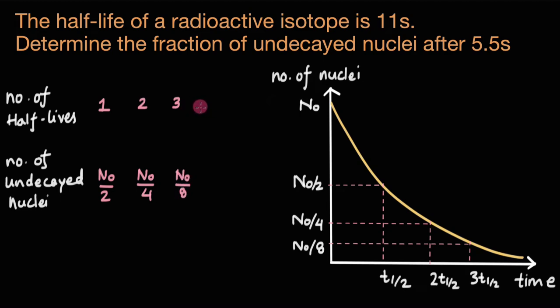So if we keep on writing half-lives, we can say that after nth half-life, the number of undecayed nuclei would be N0 divided by 2 to the power n. Because we can write 8 as 2 to the power 3, we can write 4 as 2 square, and 2 to the power 1 is just 2.